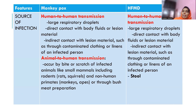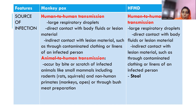Monkeypox transmission can be human-to-human through large respiratory droplets, direct contact with bodily fluids or lesion material, or indirect contact with contaminated clothing or linens used by the affected person. Animal-to-human transmission occurs through bites or scratches of infected animals such as small mammals including rodents and non-human primates like monkeys, and also through bush meat preparation.